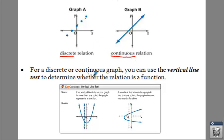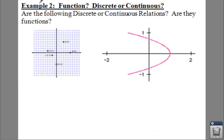Now, any time you have discrete or continuous graphs, you can use a vertical line test to determine whether your relation is a function. You can draw a vertical line through your graph, and notice in this first case it only goes through there once, so that would be a function. On the right, this vertical line goes through your function twice, so that is not a function.